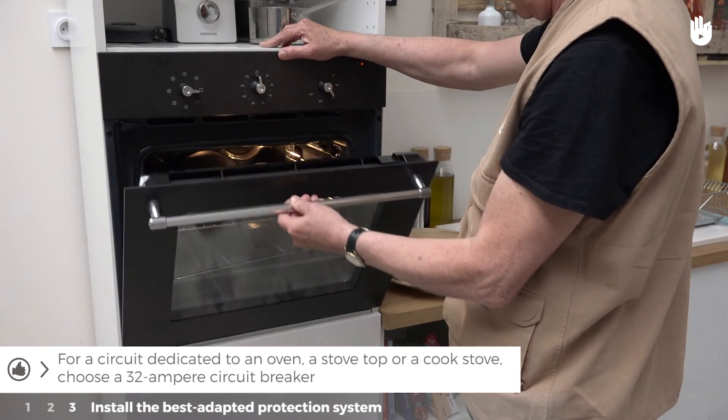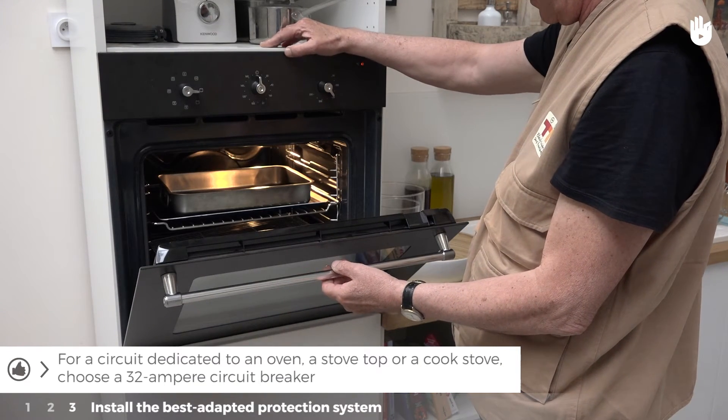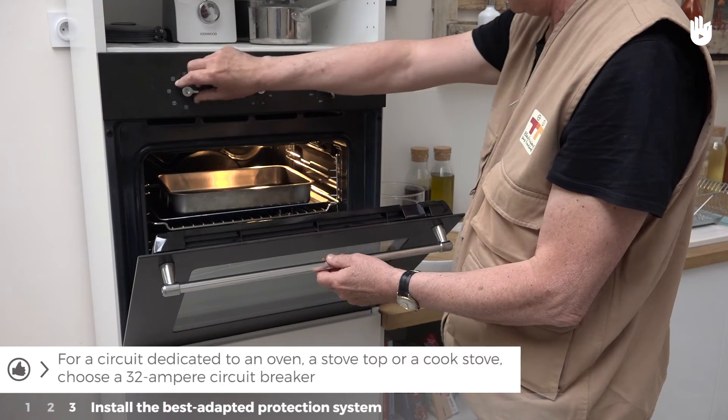For a circuit dedicated to an oven, a stovetop, or a cook stove, choose a 32A circuit breaker.